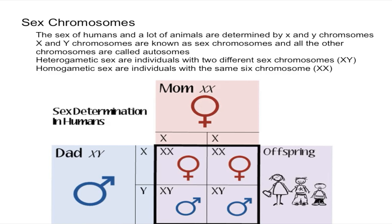Someone that is a heterogametic sex has two different sex chromosomes — an X and a Y. In humans, these individuals are males because the Y chromosome makes you a male. So if you have an X and a Y, you are a male, and if you have two X's, you are a female.